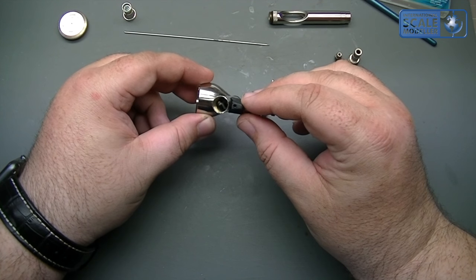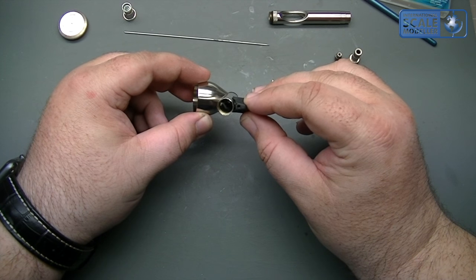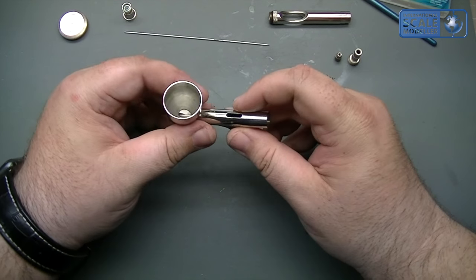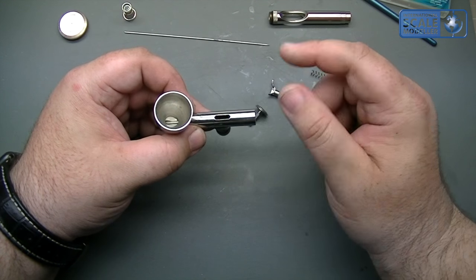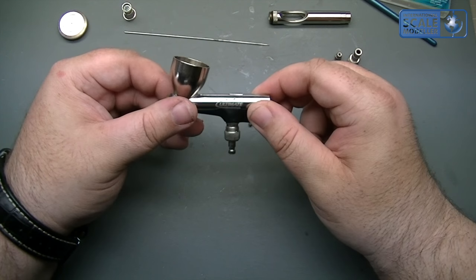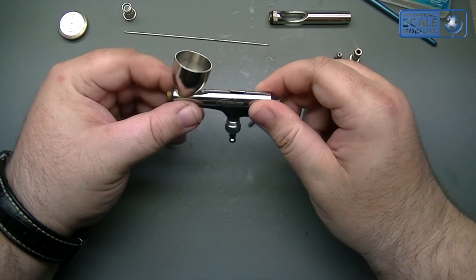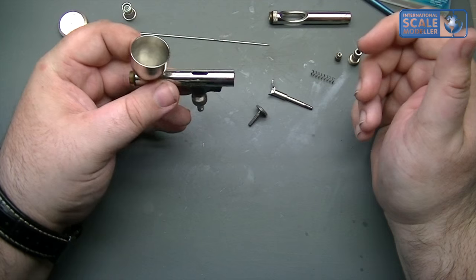Now the only other thing in there, right down the bottom of there, is the needle bearing. You need a flat head screwdriver, unscrew that if you ever need to change it and you can adjust the pressure in there as well. So if you find it a little bit loose you can tighten it up a little bit and vice versa. If you find it a little bit tight then you can loosen it. So that's it really, that's the basic airbrush disassembled.